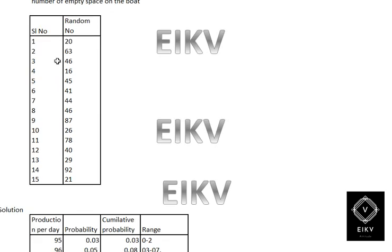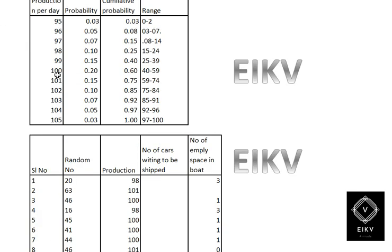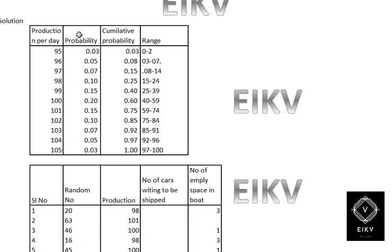We need to find two things: the average number of cars waiting to be shipped and the average number of empty spaces. The random numbers given are: 20, 63, 46, 16, 45, 41, 46, 44, 46, 87, 26, 28, 40, 29, and 92 and 21.